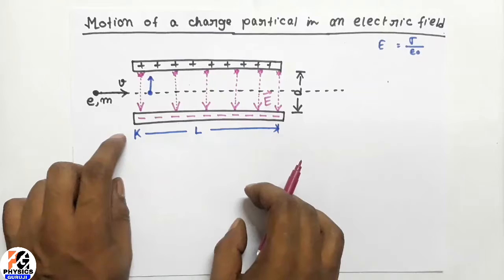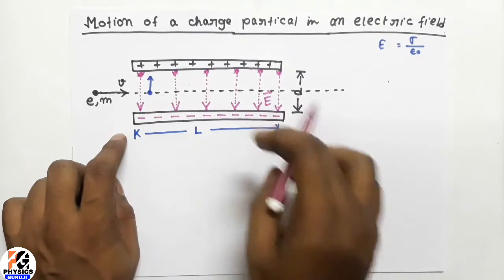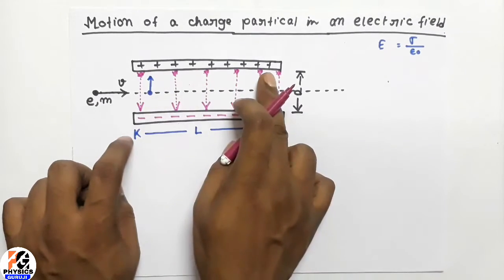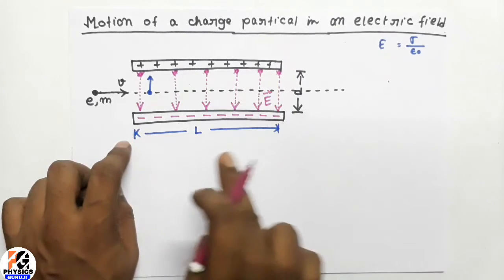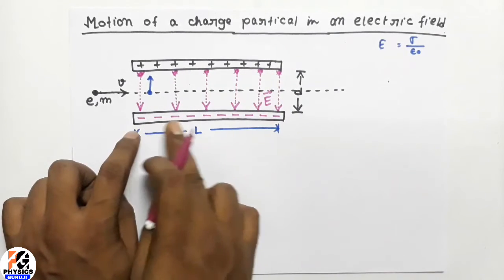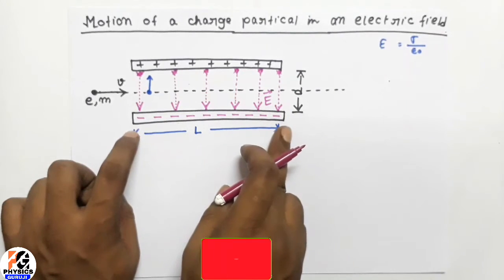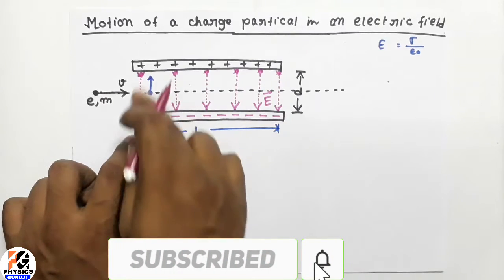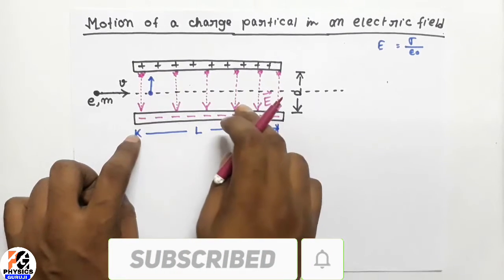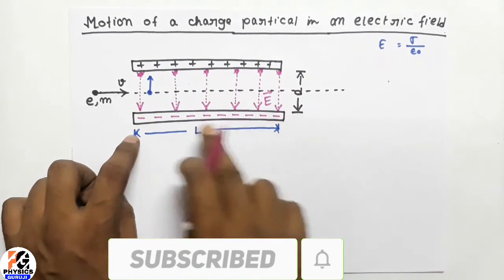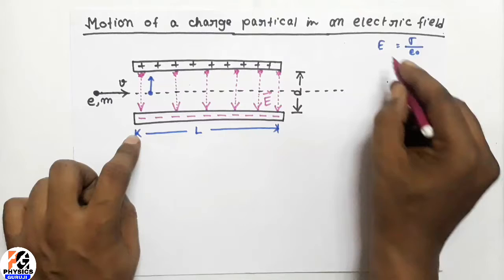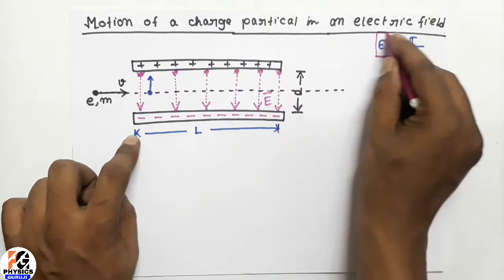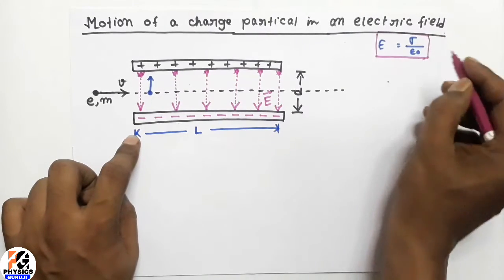Let us consider that the upper plate of the capacitor is positively charged and the lower plate of the capacitor is negatively charged, so that the direction of electric field is vertically downward. The magnitude of the electric field will be given as E equal to sigma by epsilon zero.